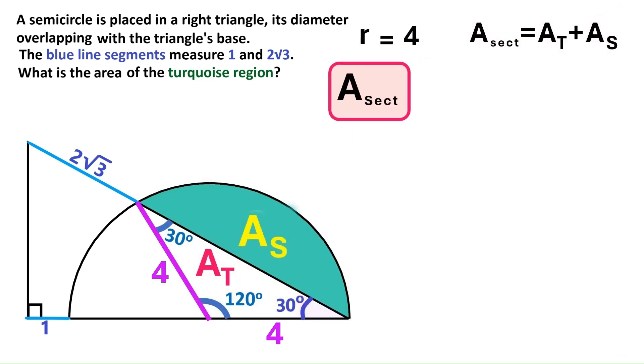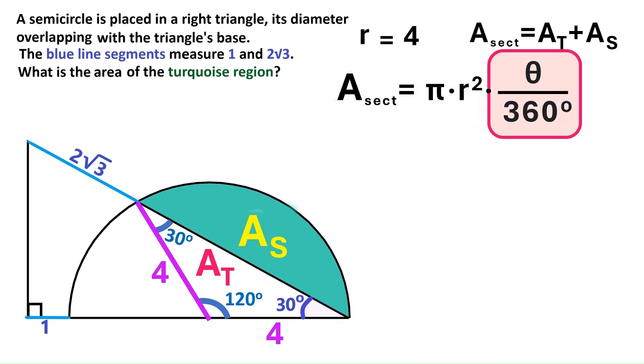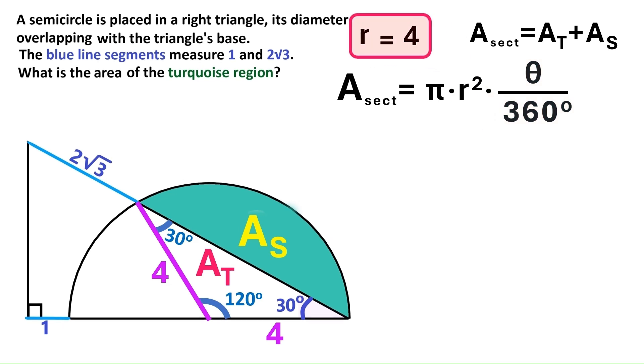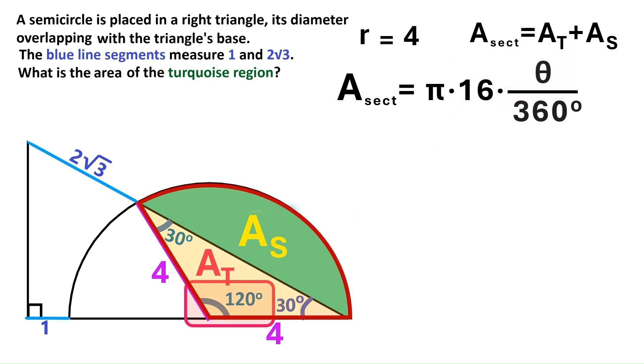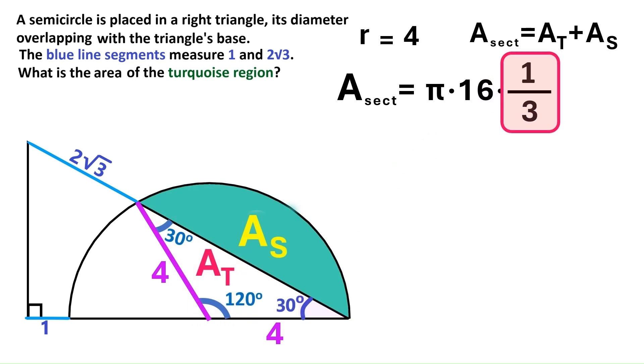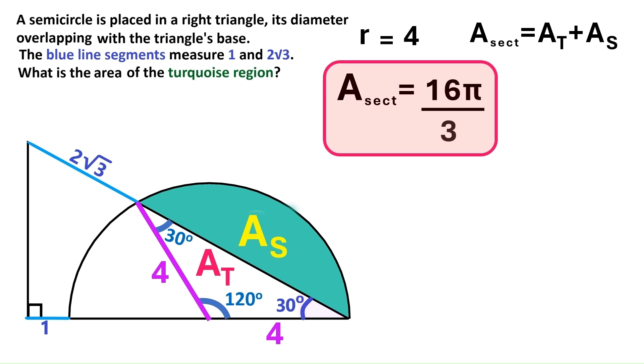Next we'll use a formula to find the area of the sector. And it equals pi times R squared times theta over 360 degrees. We already know that R is 4, so let's put that value into our formula and we get 16. And this theta is the sector's angle and this sector's angle is 120. So we replace this theta with that and we get 1 over 3 here. And the area of the sector turns out to be 16 pi over 3.